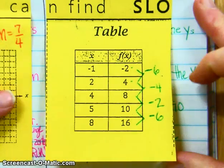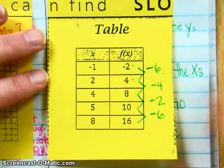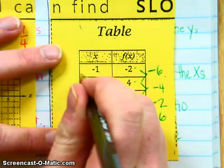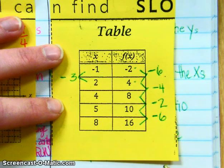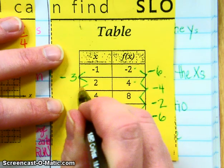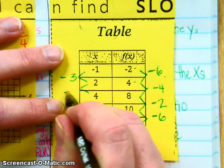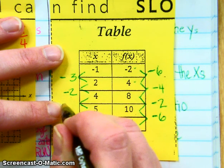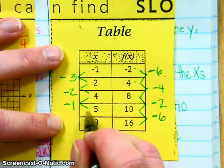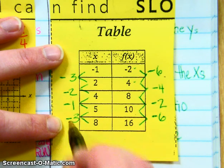So we've done step one, now let's find the difference in the x's. Negative 1 minus 2 is negative 3, 2 minus 4 is negative 2, 4 minus 5 is negative 1, 5 minus 8 is negative 3.